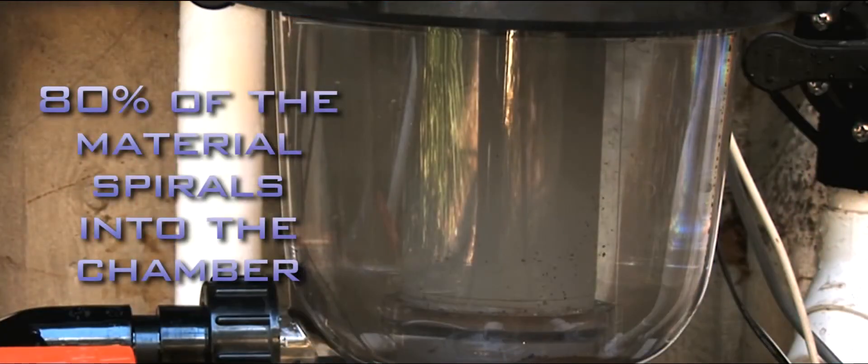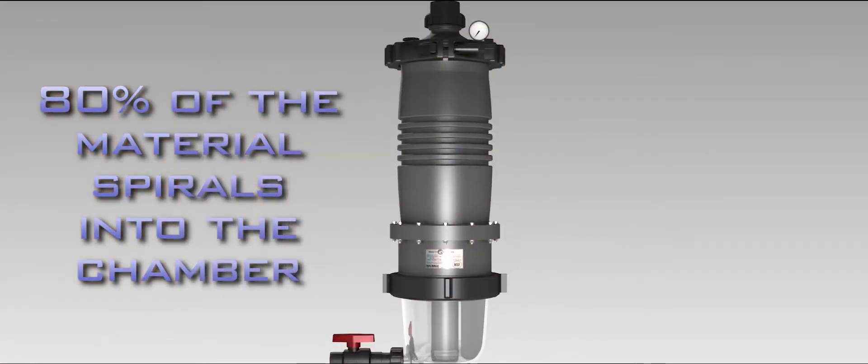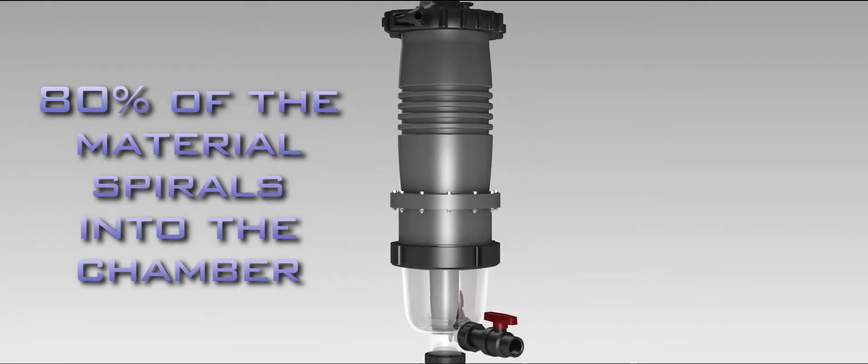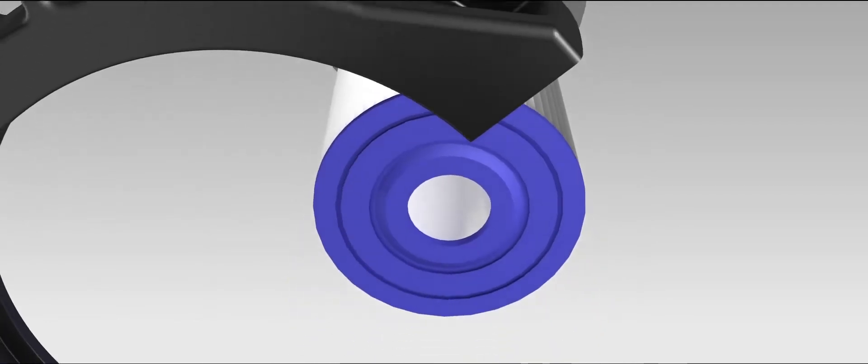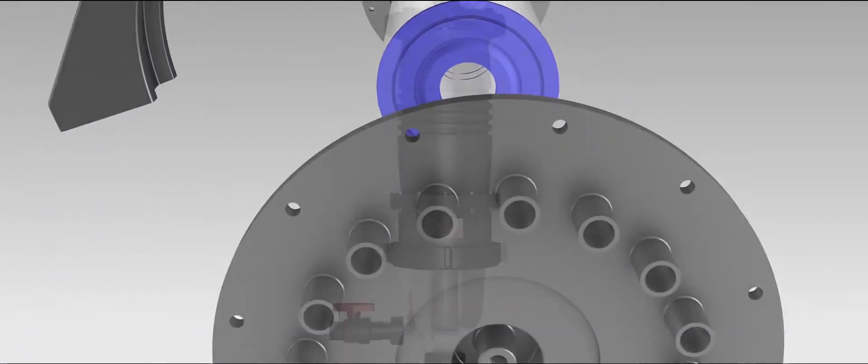Approximately 80% of this material spirals down into the Multicyclone's clear polycarbonate sediment chamber. The pre-filtered water then receives a final polish from its in-built filter cartridge before being sent, sparkling, back into the pool.